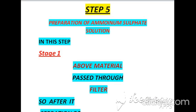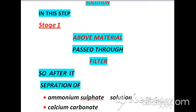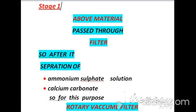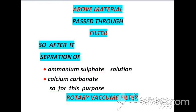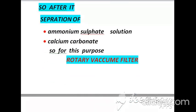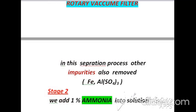According to step five, which is filtration of ammonium sulphate solution, we filter the material obtained from the reactor. The material passes through a rotary vacuum filter to separate ammonium sulphate solution and calcium carbonate. We also remove some impurities, and during stage two we add one percent ammonia gas into the solution.